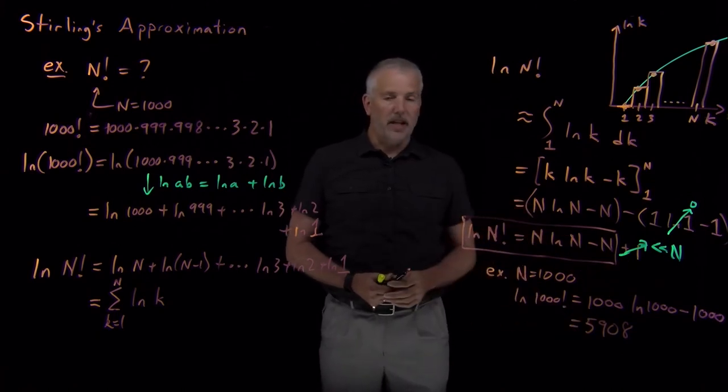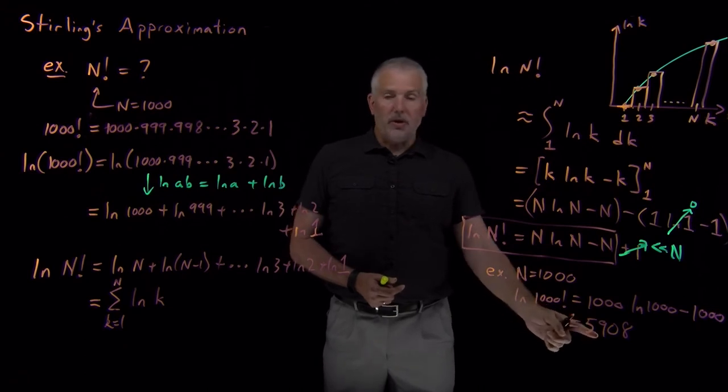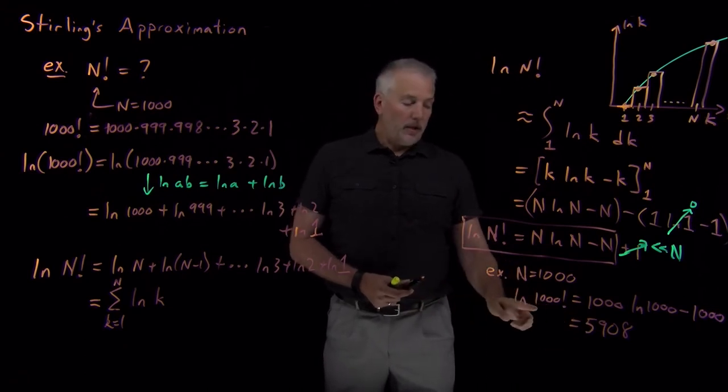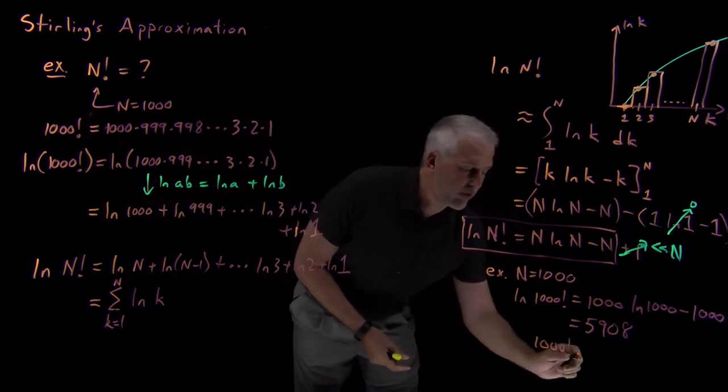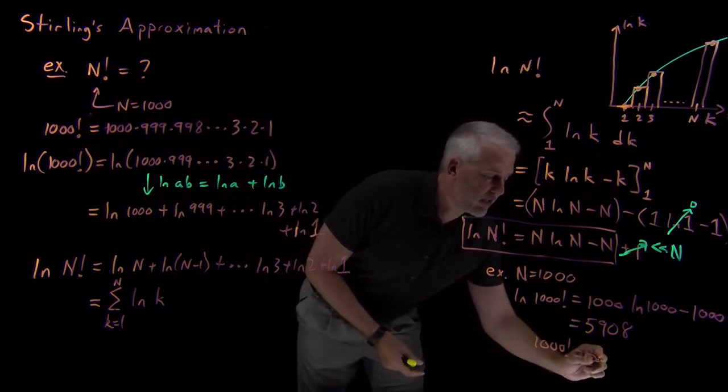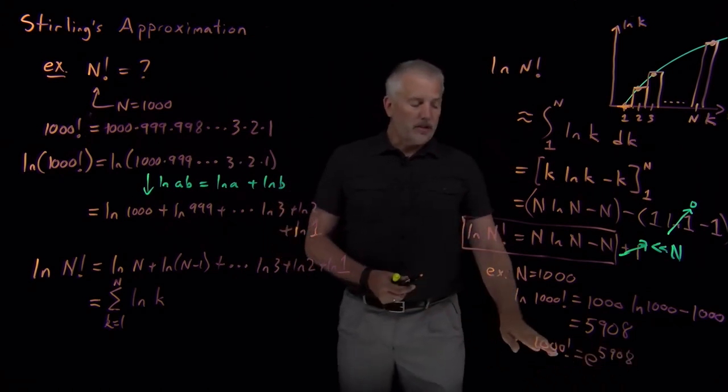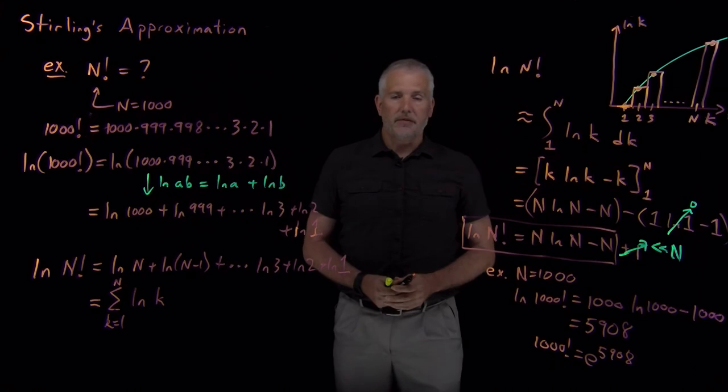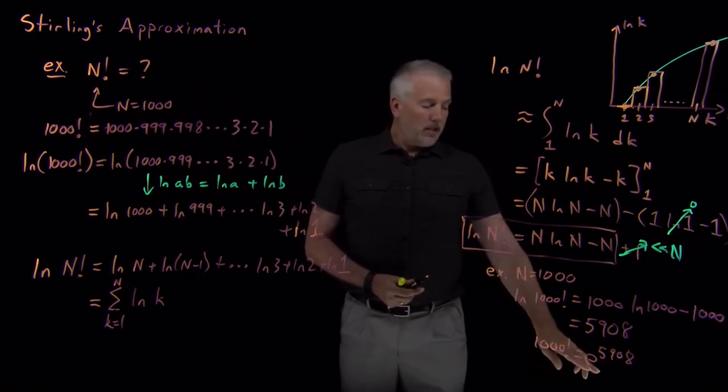What that tells us, log of 1,000 factorial is 5,908. If I really want to know what 1,000 factorial is, all I have to do is undo the logarithm by taking the exponential of both sides, so e to the 5,908. So 1,000 factorial has the value of e to the 5,908.